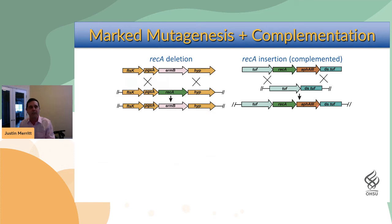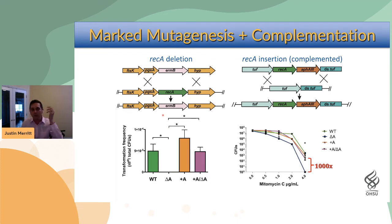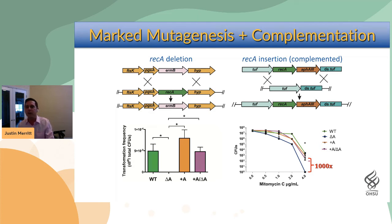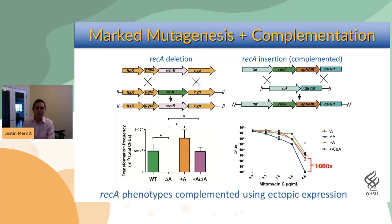We then attempted actual mutagenesis, targeting RecA first. RecA is a wonderful first gene to delete because it's highly conserved, not essential, and has very predictable phenotypes — most notably, if you knock out RecA, you should not be able to transform the organism again. That's exactly what we observed. We also tested for genotoxicity using mitomycin C, which is very damaging to DNA — especially without RecA — and saw about three orders of magnitude difference in survival unless the mutation was complemented.